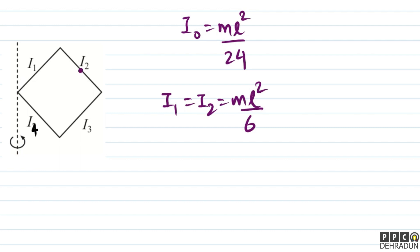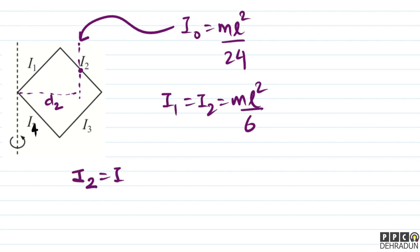अब I₂ या I₃ की बात करते हैं। Rod 2 के लिए I₀ उतना ही रहेगा। लेकिन इस rod के center से required axis तक की distance D₂ निकालनी होगी। तो I₂ = I₃ = I₀ + M·D₂²।